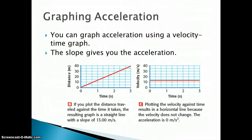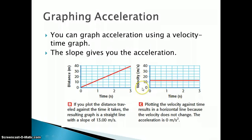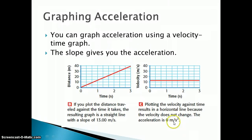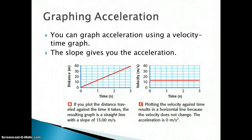We can graph acceleration as well using a velocity-time graph. Notice we used time and distance before — this time we use time and velocity, and the slope is going to tell us the acceleration. In this case, since the velocity remained the same, there's no real acceleration, so acceleration is zero meters per second squared. Whenever you get your units, it's going to be distance divided by time divided by time. Acceleration is in meters per second squared, while velocity is in meters per second — that should give you a clue when you're doing problems.